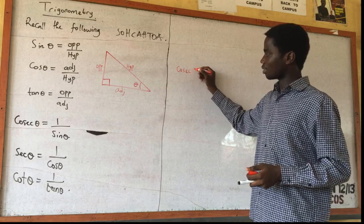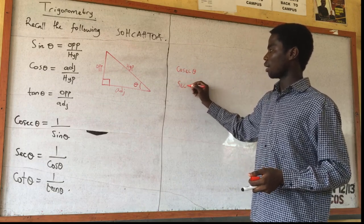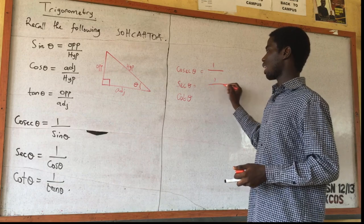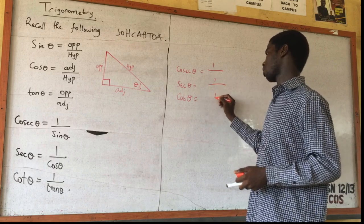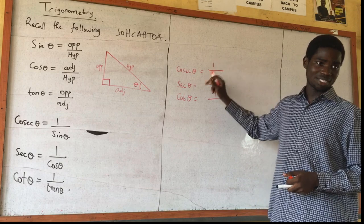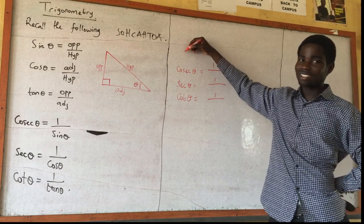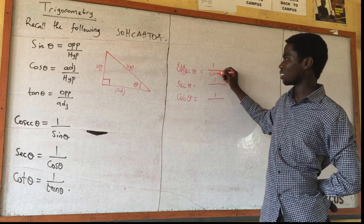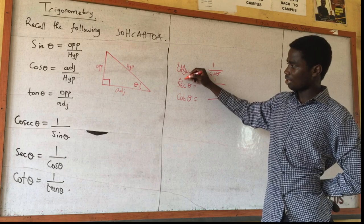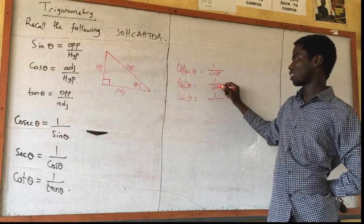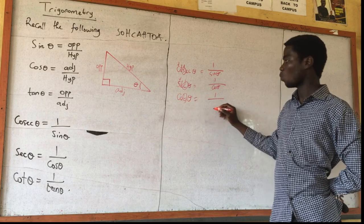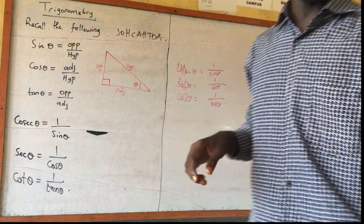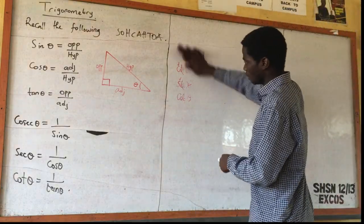How do you know which is 1 over sine and which is 1 over cos? You just need to count the first three letters. Cosec starts with C-O-S, matching sine — so cosec is 1 over sine theta. Sec starts with S-E-C, matching cos — so sec is 1 over cos theta. And obviously cot is 1 over tan theta. That's a very good hint for remembering these inverse trig ratios.